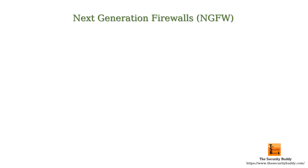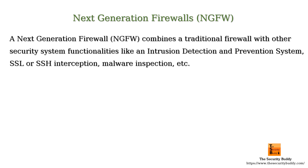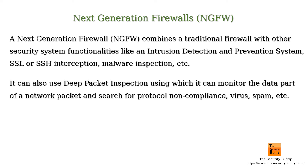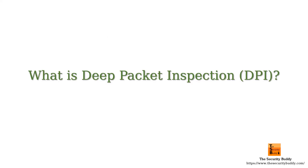There is another type of firewall called the next generation firewall. A next generation firewall combines a traditional firewall with other security system functionalities, like an intrusion detection and prevention system, SSL or SSH interception, malware inspection, etc. It can also use deep packet inspection, using which it can monitor the data part of a network packet and search for protocol non-compliance, virus, spam, etc.